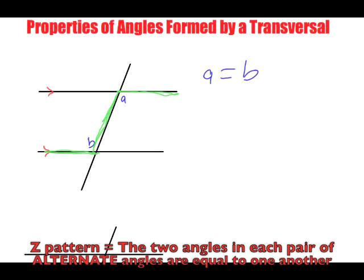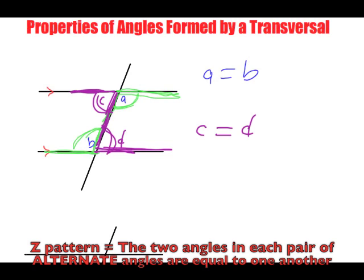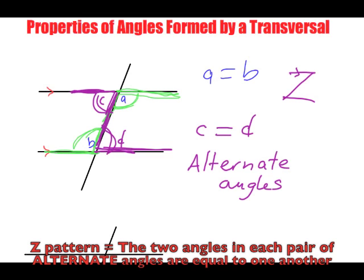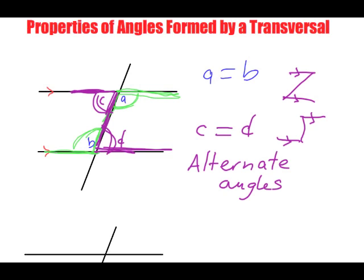A Z pattern is formed, and the inside of this Z — or backwards Z — these inner angles equal one another. We can do the same with a regular Z pattern: the inner angles also equal one another. Label these as C and D, so angle C equals angle D. These are considered alternate angles, and alternate angles form this Z shape or backwards Z shape, where the parallel lines are the horizontal bars and the transversal is the diagonal.